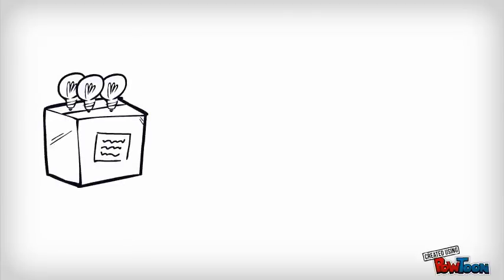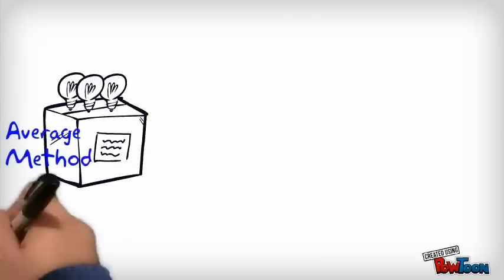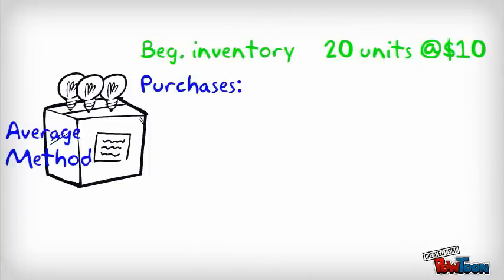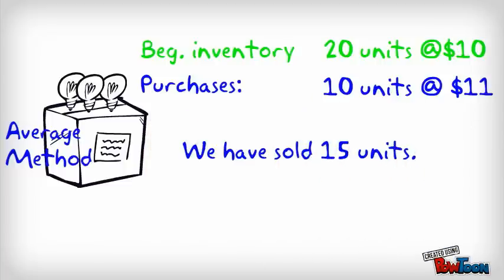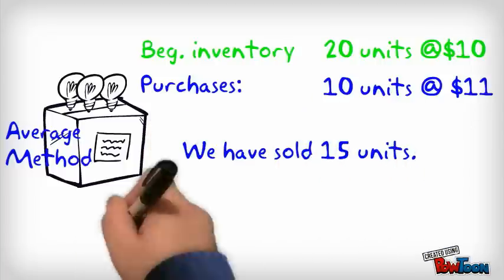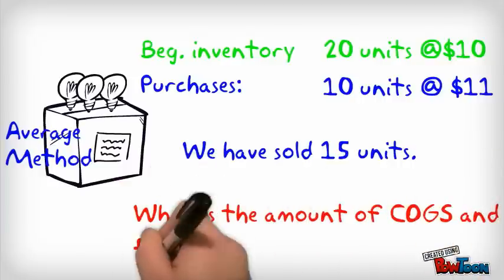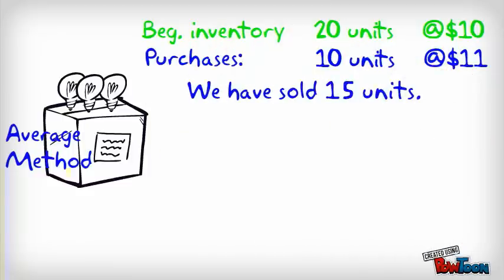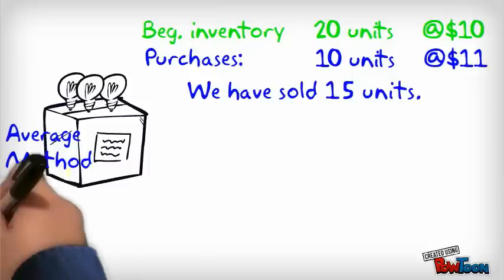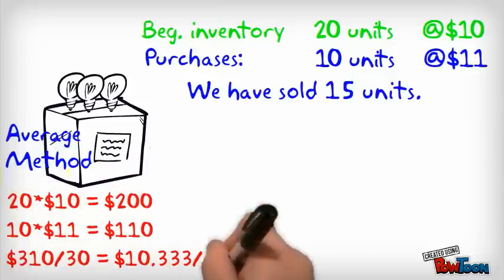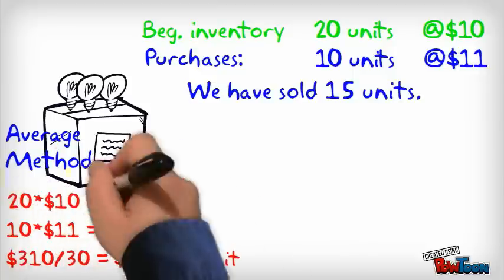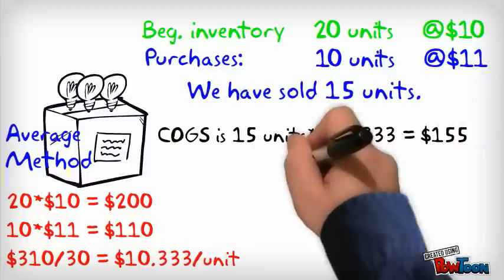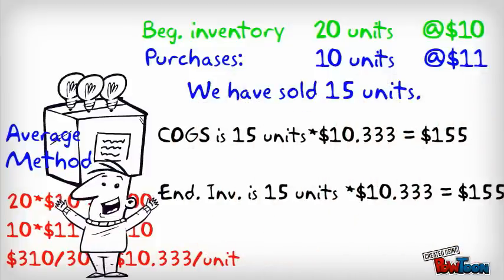Let's solve the same problem using the average cost method. Same beginning inventory: 20 units at $10. Same purchases: 10 units at $11. We have sold 15 units — find the cost of goods sold and ending inventory. We first have to find the average cost per unit. We need the total cost, which is 20 units at $10 and 10 units at $11, adding up to $310. Divided by 30 units total, that is $10.33 per unit. So the cost of goods sold for 15 units is 15 times that price.